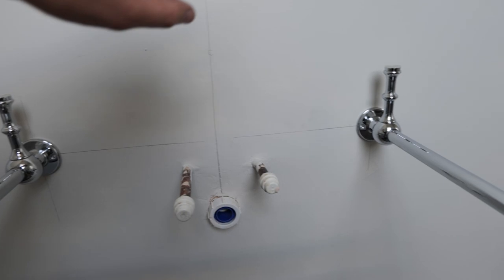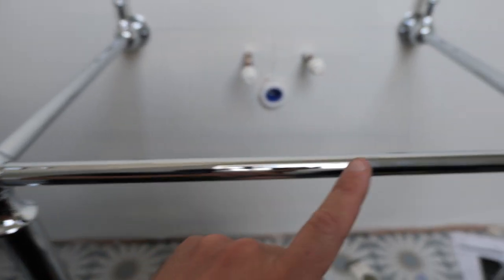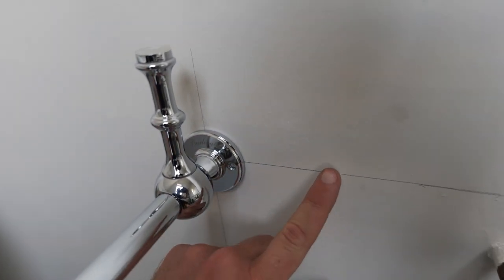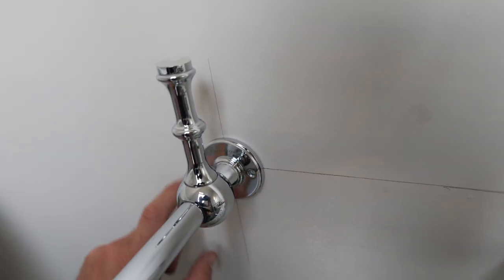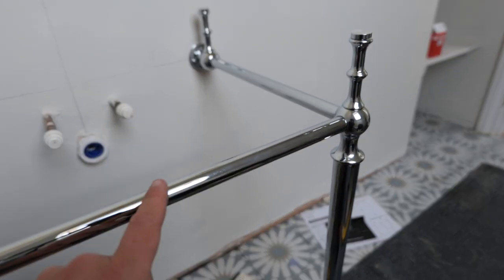Where I've started is I've marked the center of the waste, and then I've put a line either side to determine the distance apart from the chrome fixings here. If you can see that zooms in on this chrome fixing here, I've marked the center line horizontal and also the center line vertically, so I know exactly where I need to fix it to ensure that all these chrome legs and arms are all totally level.